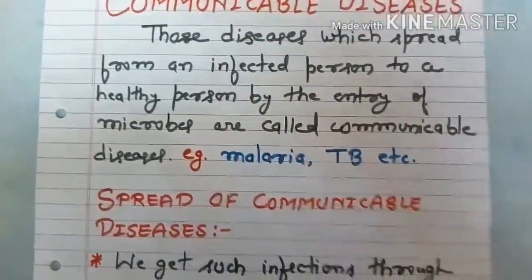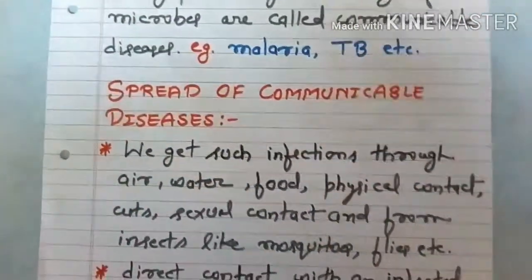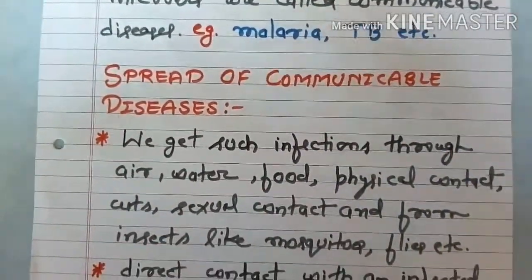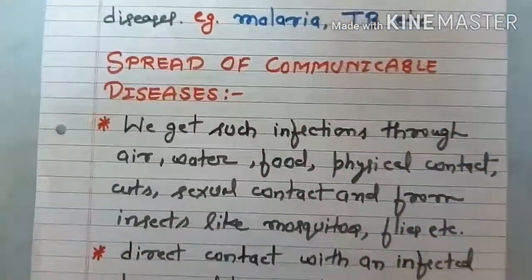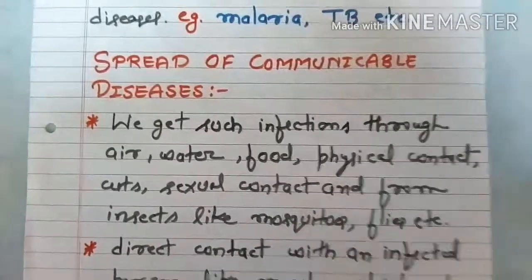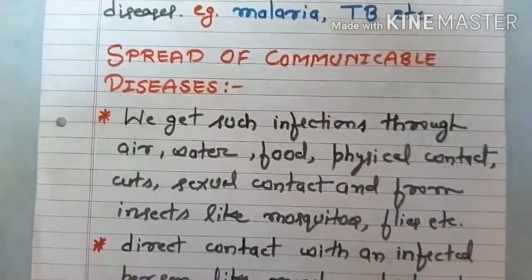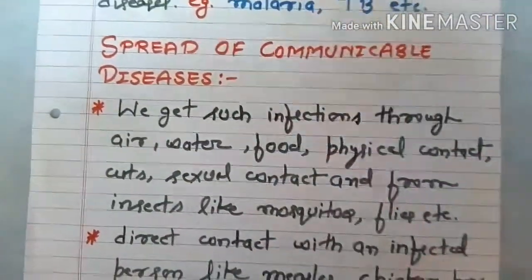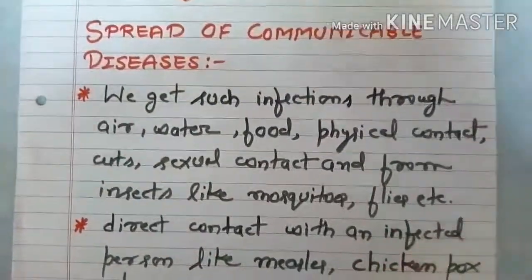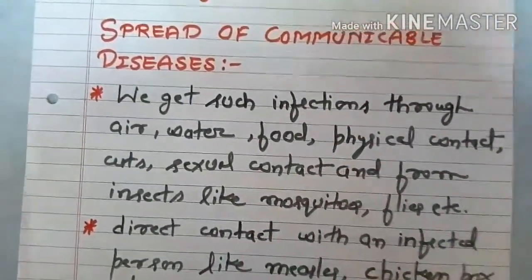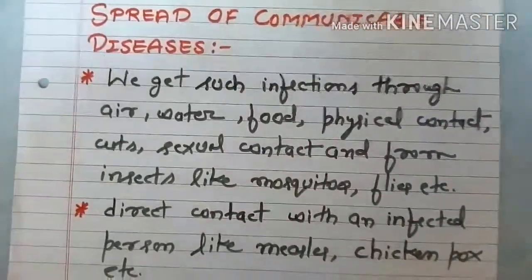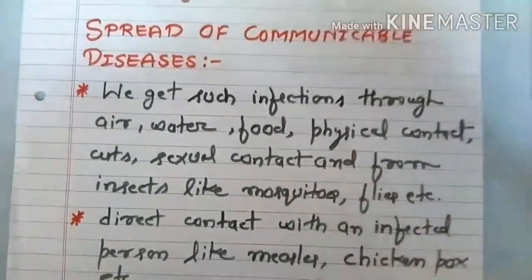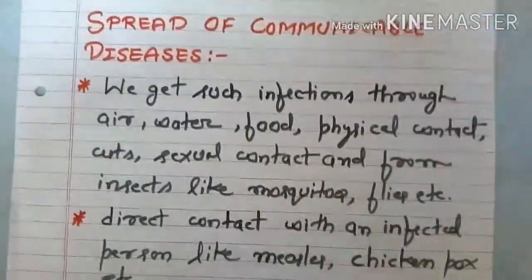Now we will see how communicable diseases spread. We get such infections through air, water, food, physical contact, cuts, sexual contact, and from insects like mosquitoes and flies, etc.